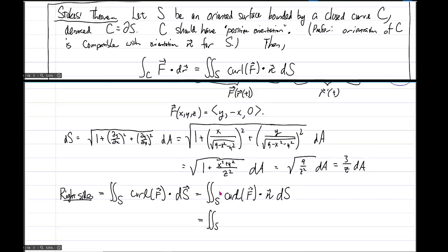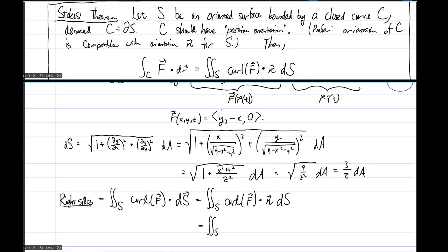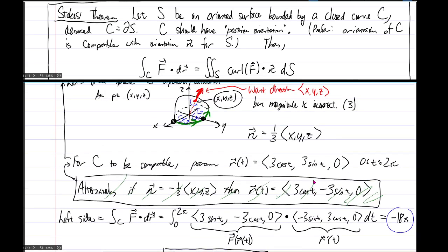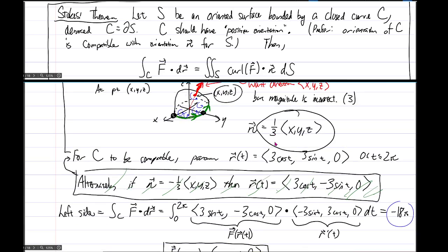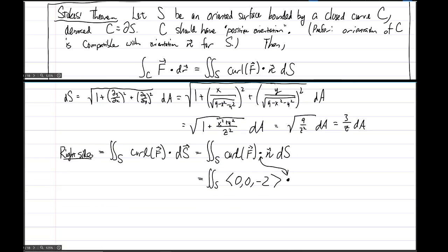And this will end up being double integral over S of, if we take the vector field that's right here, and if you compute the curl, you should end up with 0, 0, negative 2. Then copy the dot, so that dot is this dot. Now we need the normal vector, scrolling back, we had that back here. Let's just go ahead and write that one-third inside. So we'll have one-third x, one-third y, one-third z. I'll just write that as x over 3, y over 3, z over 3.